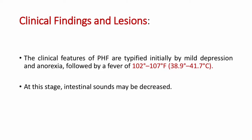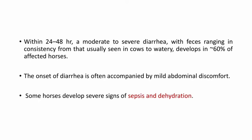The clinical features of PHF are typified initially by mild depression and anorexia, followed by fever of 102 to 107 degrees Fahrenheit. Intestinal sounds may be decreased within 24 to 48 hours. Moderate to severe diarrhea develops in approximately 60% of affected horses, often accompanied by mild abdominal discomfort, followed by severe signs in some horses such as sepsis and dehydration.